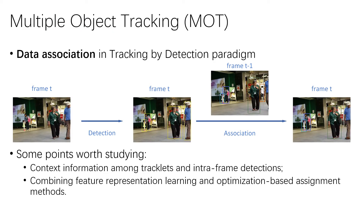In this paper, we mainly focus on the object association in multiple object tracking task. Like many other methods recently, we follow the tracking-by-detection paradigm, which includes two parts: object detection by a public detector and object association via the matching algorithm. We find some points still worth studying in the current paradigm. First, existing methods mostly ignore the intra-frame context information, which makes the tracker hard to survive in cases like severe occlusion.